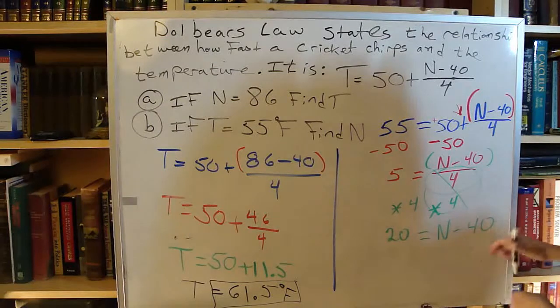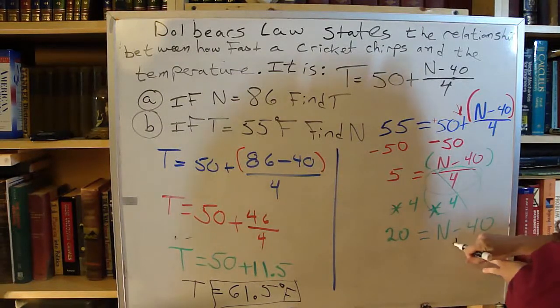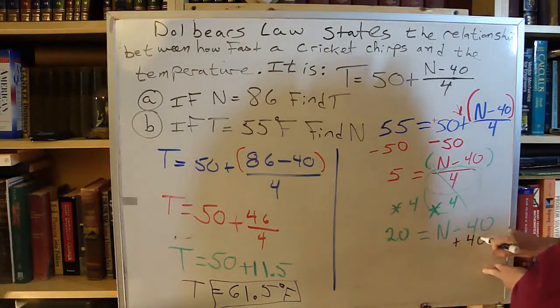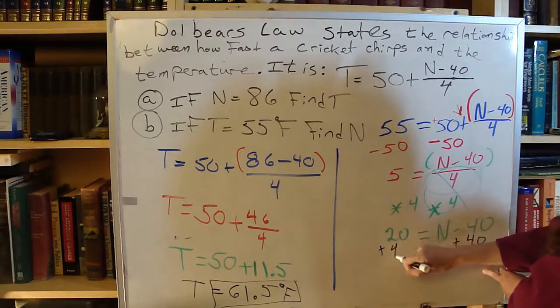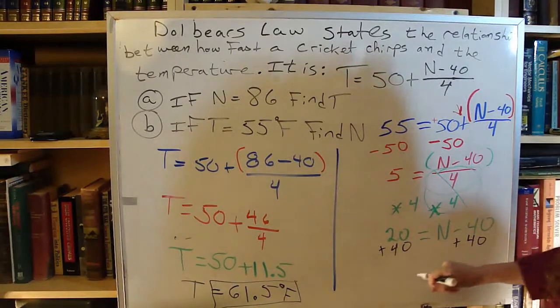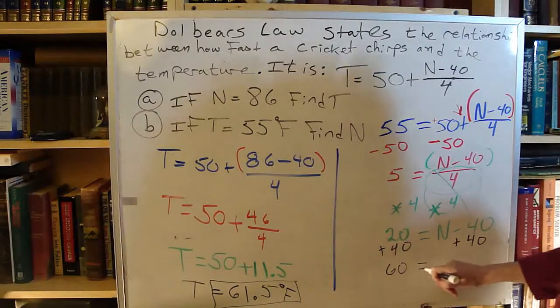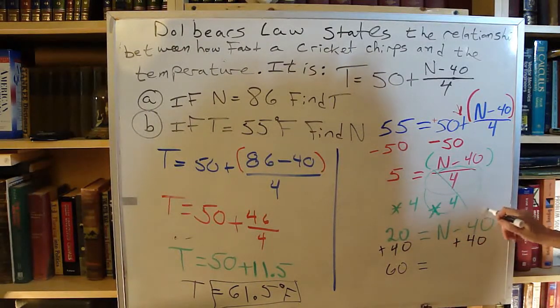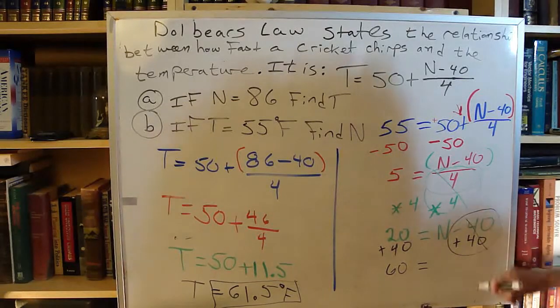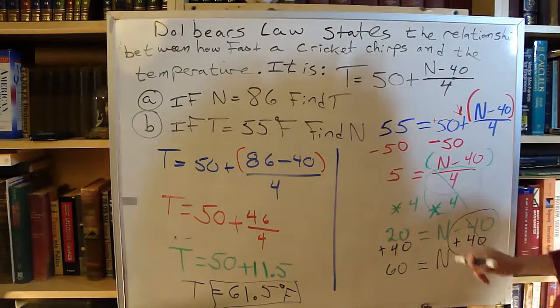Last thing to get rid of. Add the 40 over here. What I do on one side of the equal sign, I do on the other. 20 plus 40 is 60. Equals the plus 40, minus 40, cancels out. And I have just N.